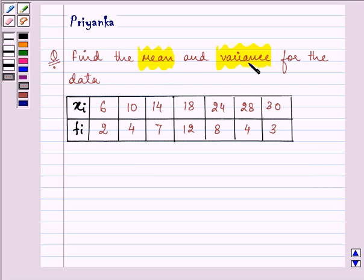So the formula for mean and variance when we are given the observation as well as the frequency is mean, denoted by x bar, equals 1 by n summation fi xi when i equals 1 till n.